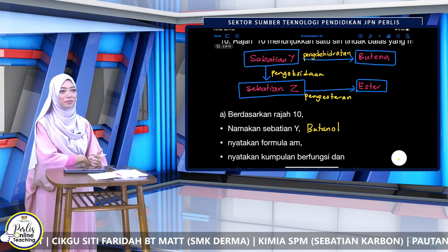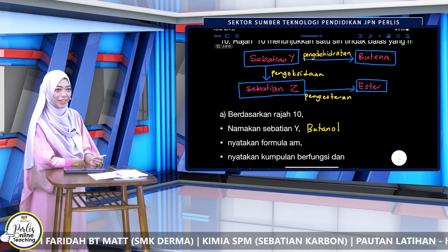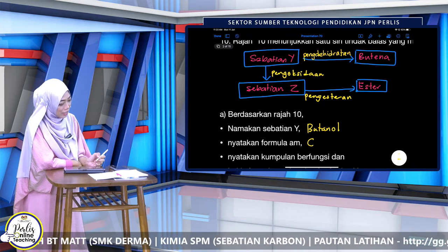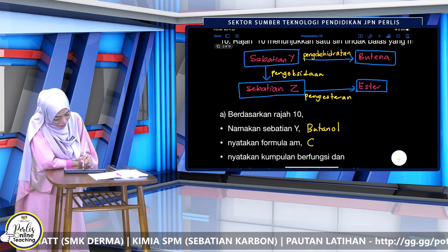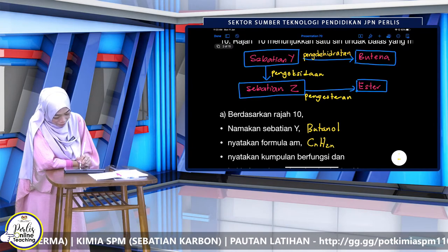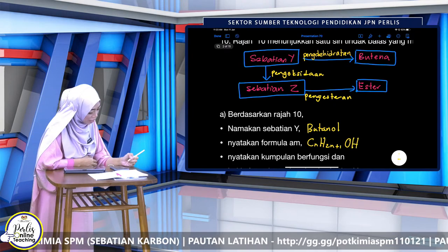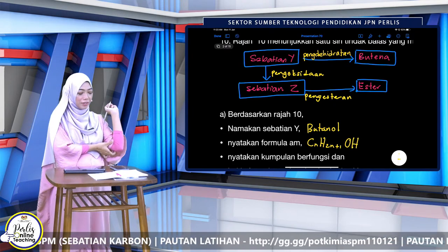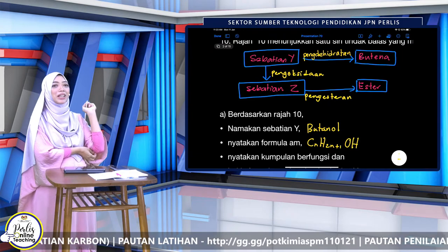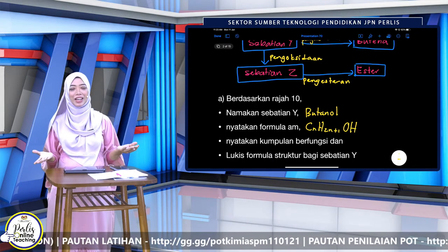Sekarang nyatakan formula untuk sebatian Y. Siapa hafal? CₙH₂ₙ₊₁OH. Bagus. Arina pun ada tulis dalam mesej. Tahniah kerana ingat. Senang je kan soalan dia — dia soalan pengetahuan je. Tetapi masuk soalan bahagian esei.